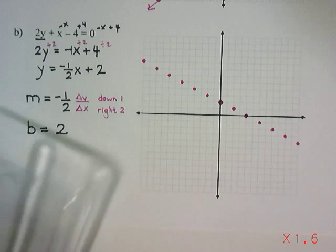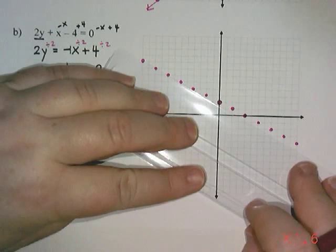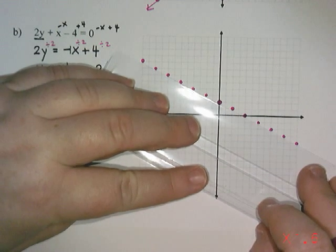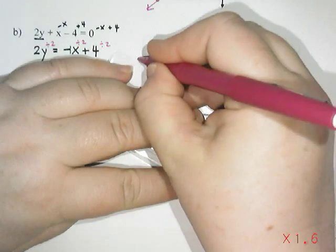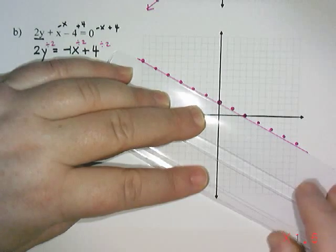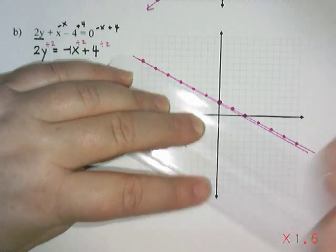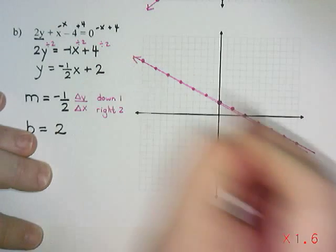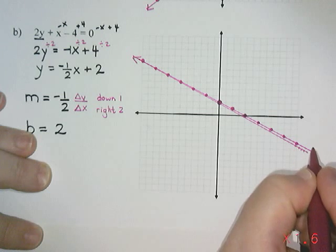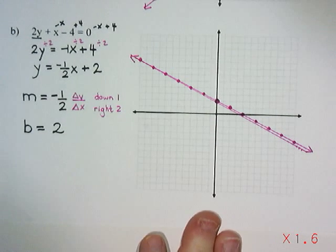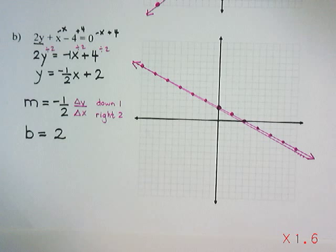And then all we need to do is draw our line. That's why it's always good to do all those points. If your ruler moves and your line ends up a little bit off, it's not the end of the world. And that's graphing lines.